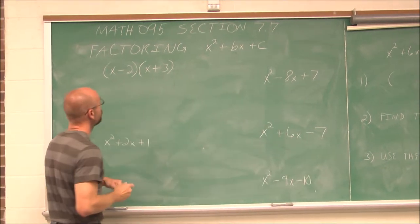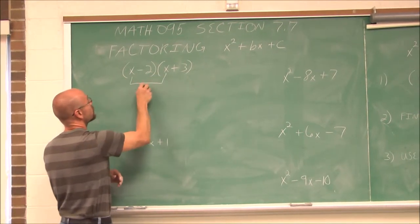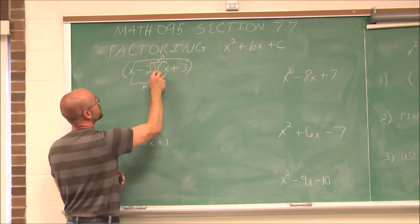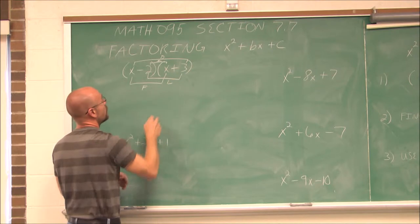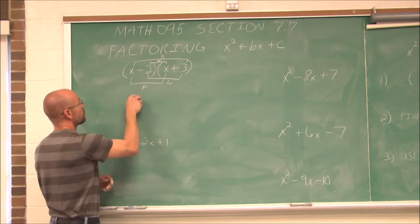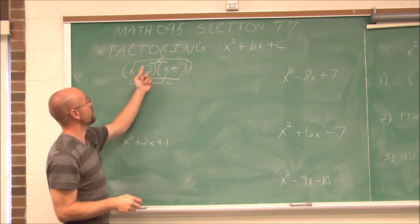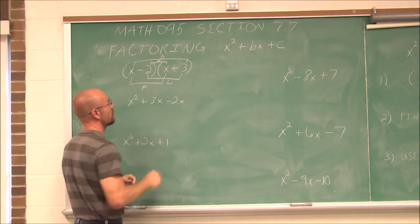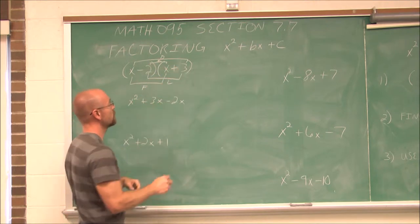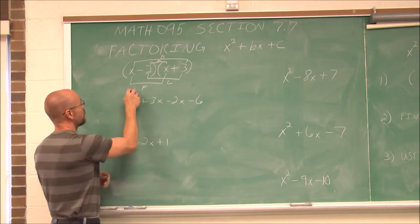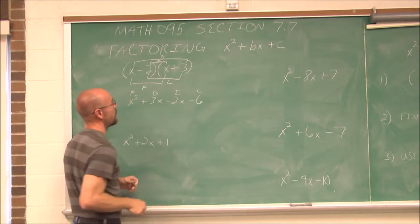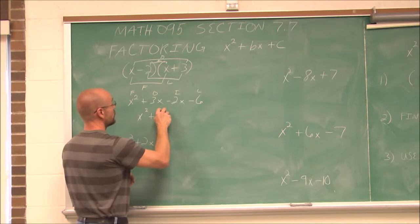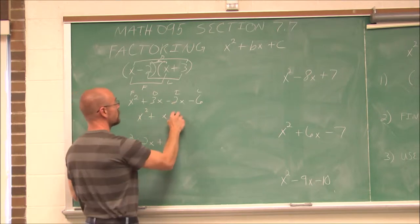Let's review FOIL. If I were to FOIL this out, we have our first term, our outer terms, our inner terms, and then our last terms. So x times x is my first term. My outer term is x times 3, which would be 3x. My inner term, negative 2 times x, is negative 2x. And negative 2 times 3 is negative 6. So this was my first, outer, inner, and last.